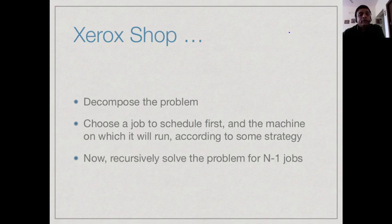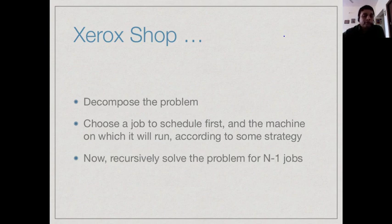This is where we come to the idea of decomposition. Can we solve this problem by reducing it to a simpler problem? Suppose we fix one job to run first — we are then left with the remaining jobs, which are smaller in number. If there is a way to optimally solve for n-1 jobs, we can pick each job as the first one, efficiently determine how long the remaining n-1 take, and choose the best. This gives us a kind of recursive solution: pick one, solve the rest, then add the time for the chosen job.